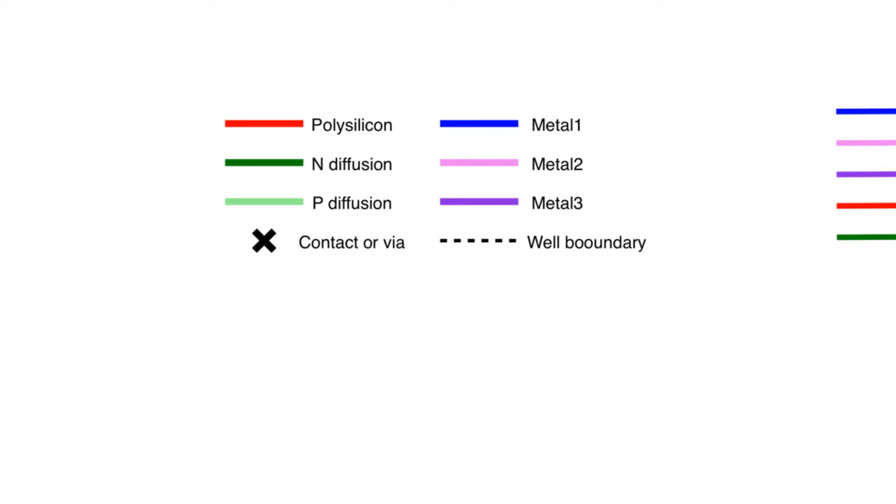Here we can see the colors of all the tracks we can use to draw the stick diagram. We're going to use red to indicate polysilicon, dark green to indicate n diffusion, and light green to indicate p diffusion. We're not going to use an active and select mask in this case, we're just going to use different colors for n plus and p plus, fully understanding that when a polysilicon wire and an n plus or p plus track intersect we're going to have a transistor.